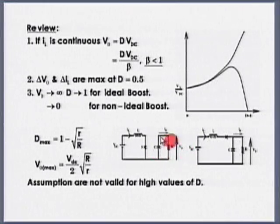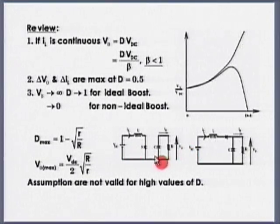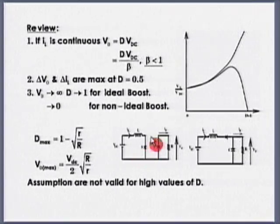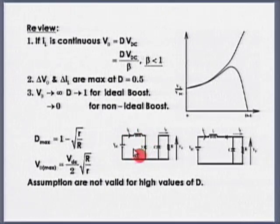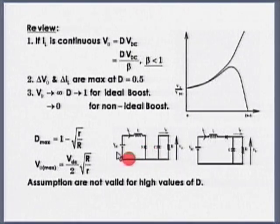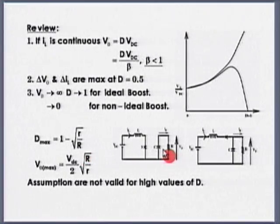We had assumed that output voltage will remain constant and ripple free. For D tending to 1, we will see that the capacitor will continuously discharge — it will continuously supply power — and the input side, the source or inductor is connected across a DC source. If there is a solar cell, current may be limited to Isc, but if there is a capacitor, we have a problem: the output side capacitor voltage tends to 0. Our assumptions are not valid for high values of D.